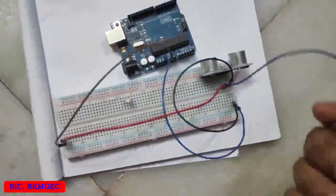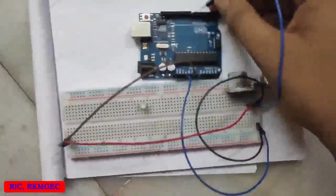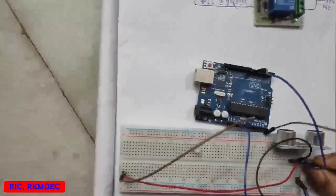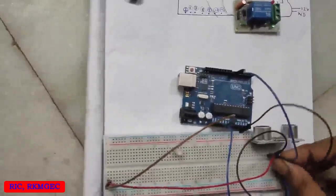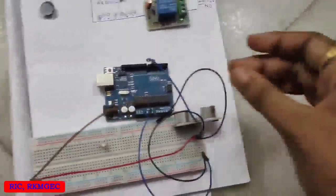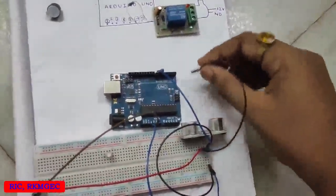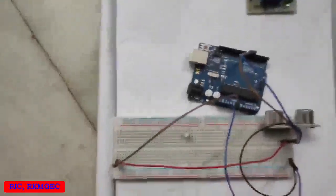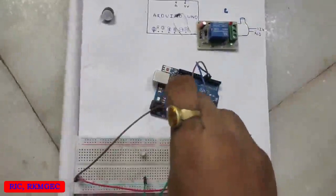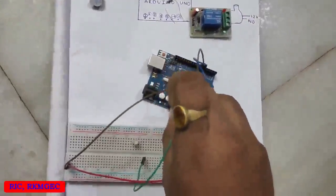The echo pin with 6th pin of Arduino. The trigger pin with the 7th pin, and let's power the RGB connecting the 3.3 volt power supply of the Arduino.